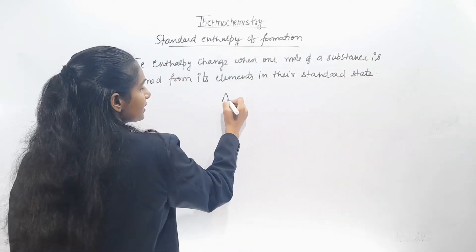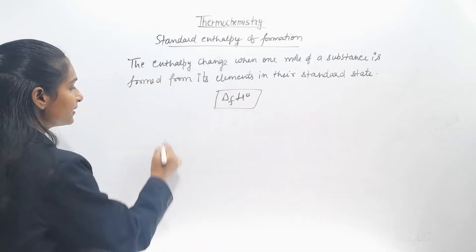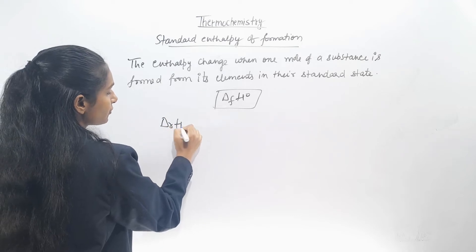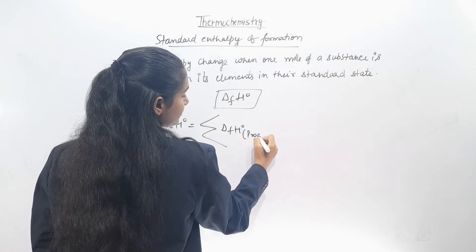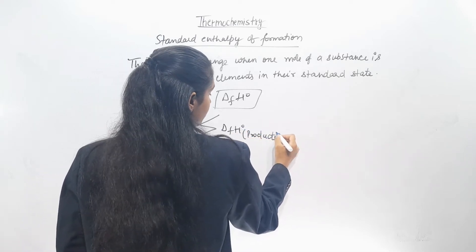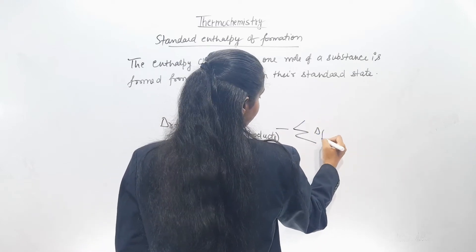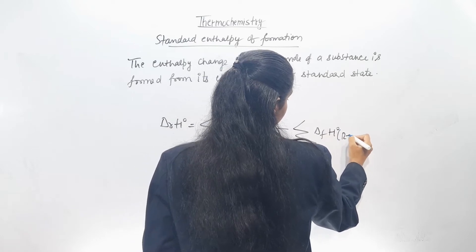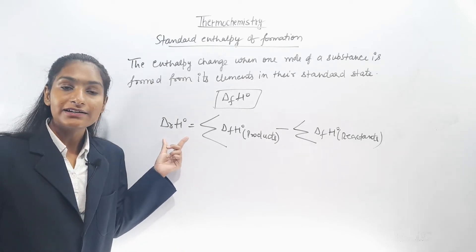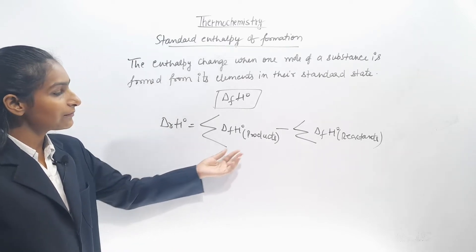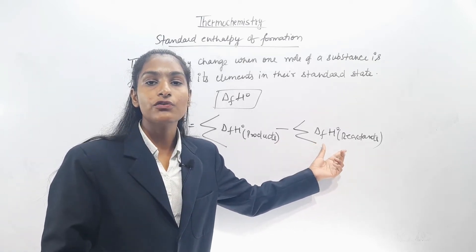We represent this as ΔfH°. If we have the standard enthalpy of reaction, it will equal the sum of standard enthalpy of formation of products minus the sum of standard enthalpy of formation of reactants.